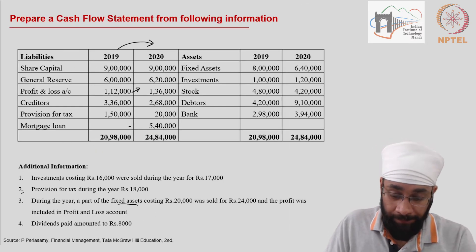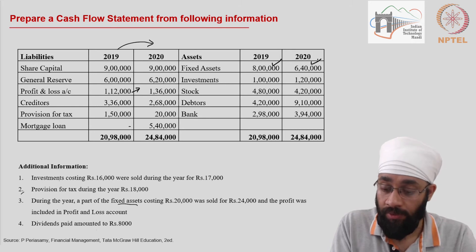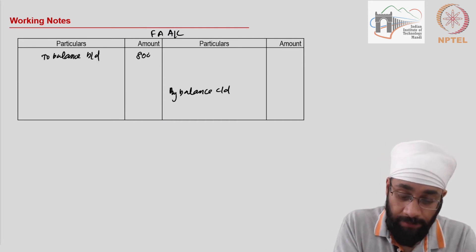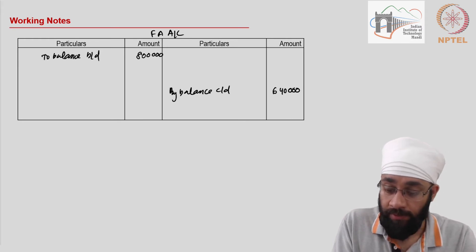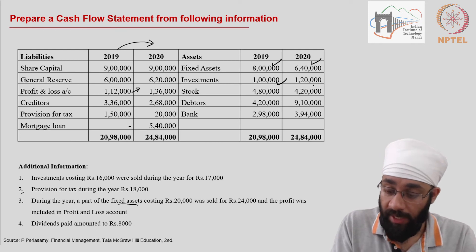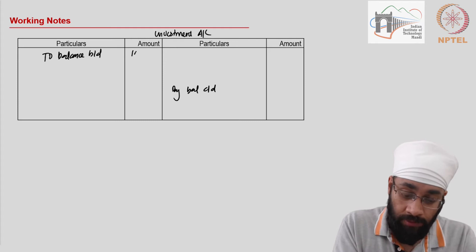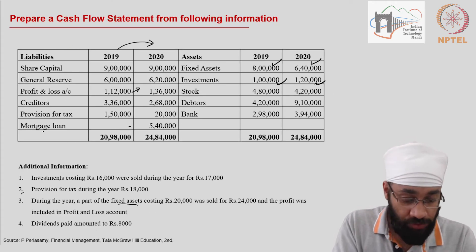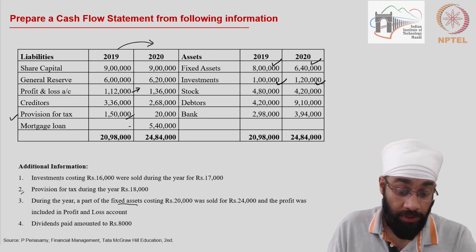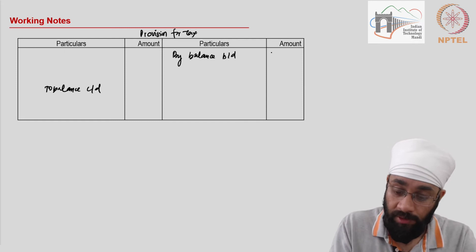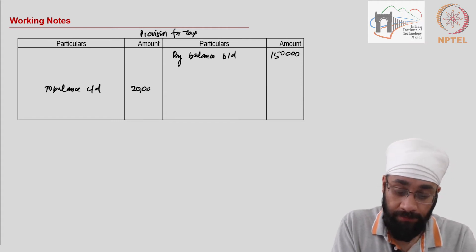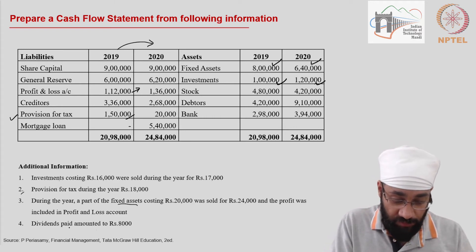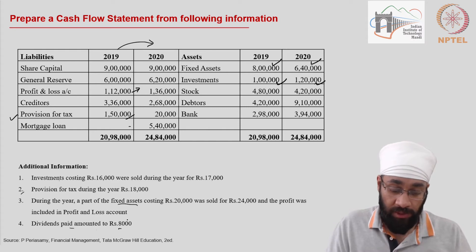So we are set to transfer the balances. The fixed assets were 8 lakhs and now they are 6,40,000. Investments were 1 lakh and now they are 1 lakh 20,000. Then you have provision for tax — it was 1,50,000 and now it is only 20,000. And for dividend, there is no provision for dividend account balance — you only have the information about dividend paid — so we are going to keep it nil.